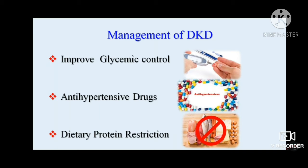For antihypertensive drugs, ACE inhibitors or ARBs are the drugs of choice for diabetic kidney disease. ACE inhibitors like enalapril and lisinopril are preferred because they control systemic hypertension and also reduce intraglomerular hypertension. When using ACE inhibitors or ARBs, we must monitor potassium levels and if hyperkalemia is found, add diuretics and closely monitor electrolyte levels.